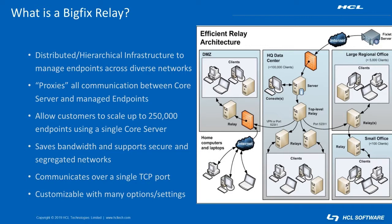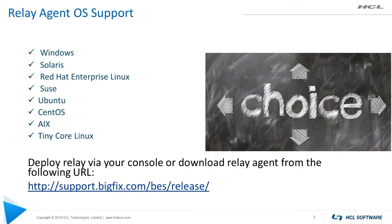This allows customers to easily scale up to 250,000 endpoints using a single core server. Relays save bandwidth because endpoints initiate communication with the relay over a single TCP port after receiving a UDP notification from their relay about a new piece of content. This eliminates unnecessary agent communication across the network, yet still provides the ability for near real-time info and patching of your endpoints.